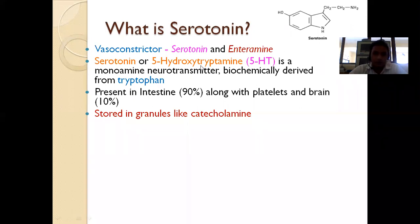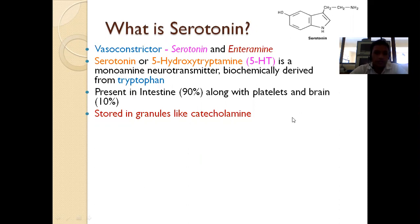Another name for serotonin is 5-hydroxy tryptamine. It is derived from tryptophan. 10% is present in the brain and platelets, while 90% is present in the intestine in the enteric plexuses.